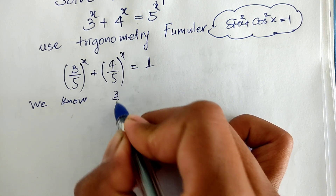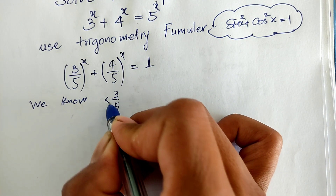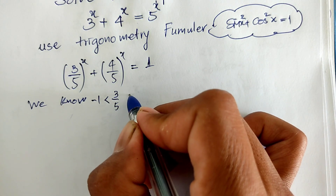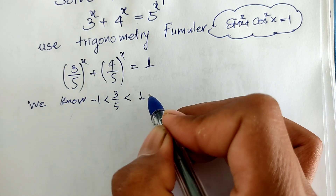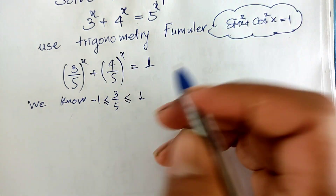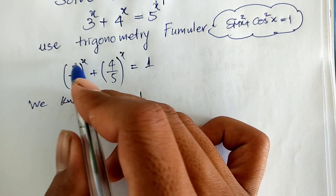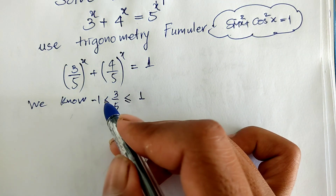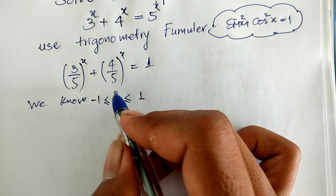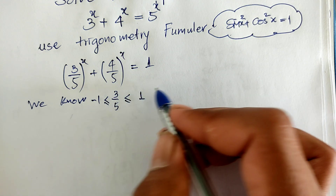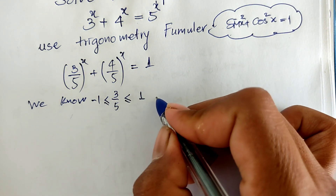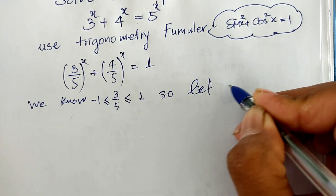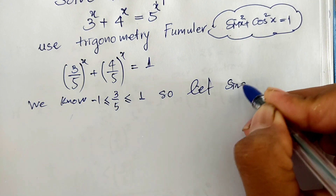And now let me see this: 3 divided by 5 is bigger than minus 1 and smaller than 1. Okay, so I let 3 divided by 5 equal sine of a.